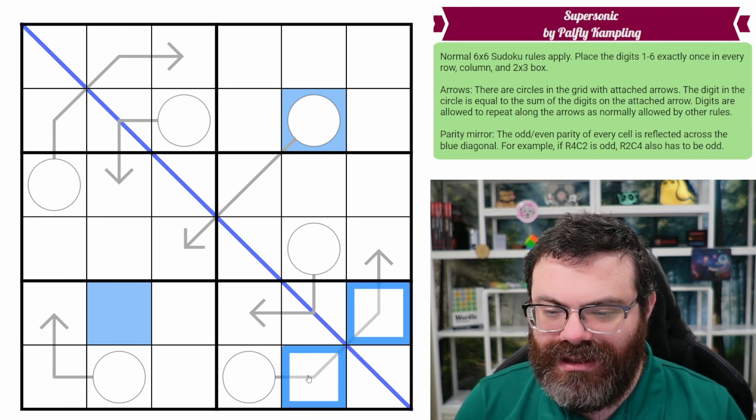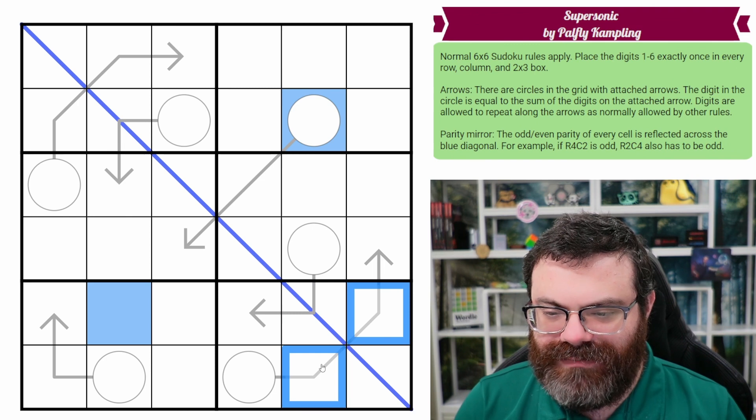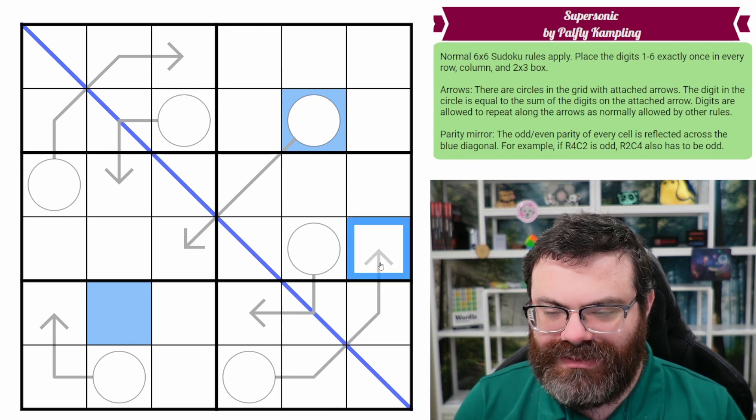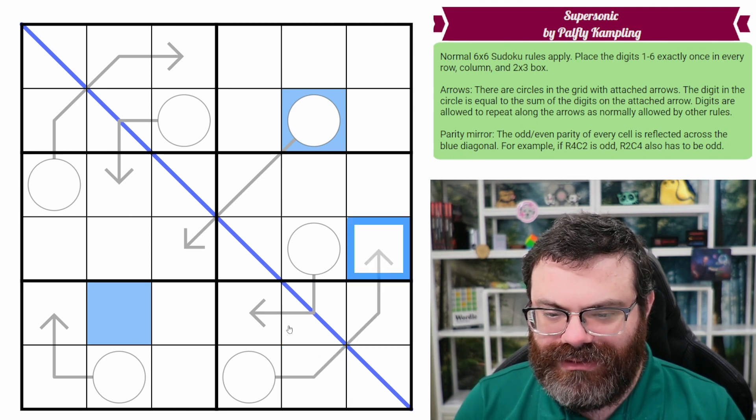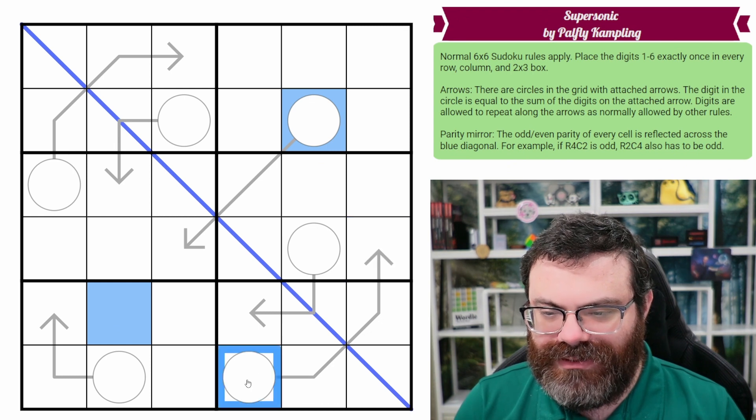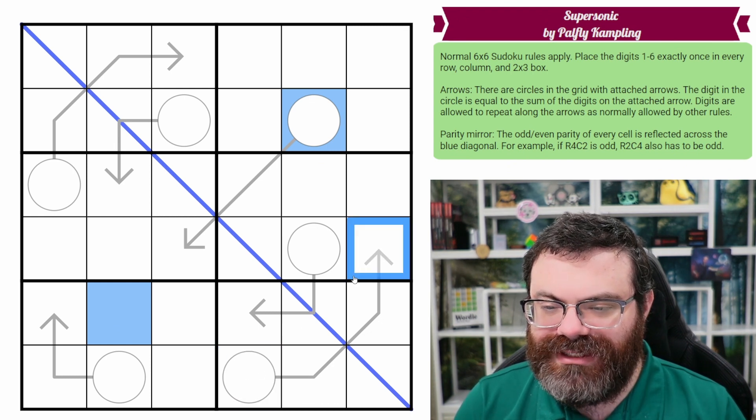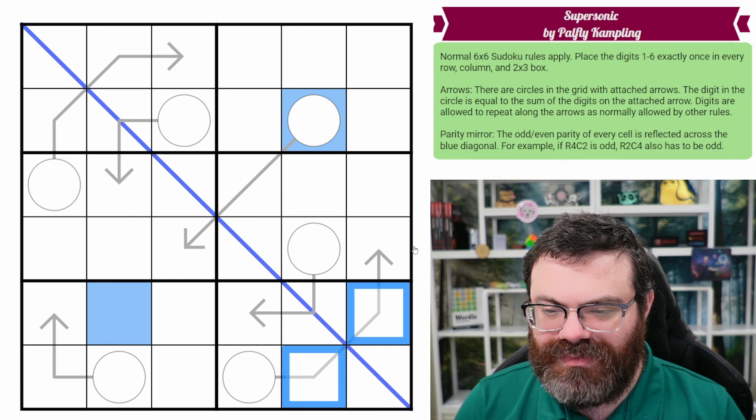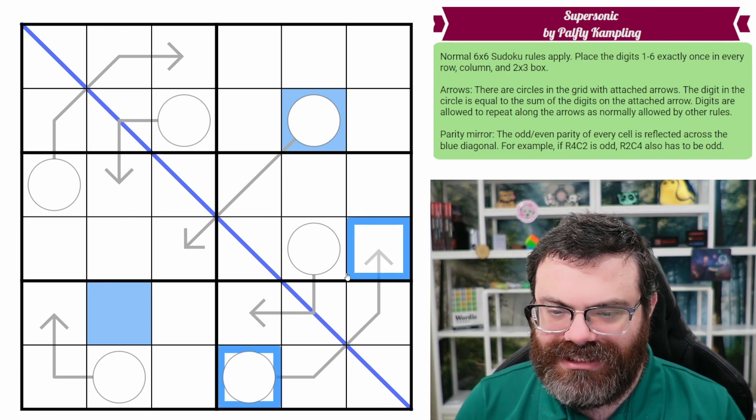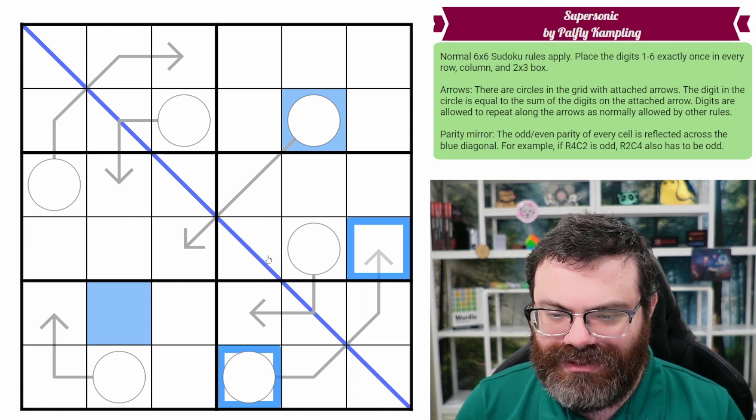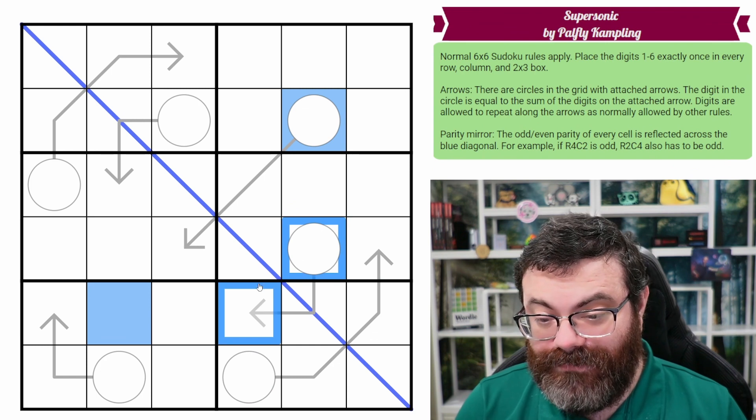So we can mirror that and that's going to be even as well. Do we have anything else like that? Well, we know that these two are the same parity, but this we don't know if it's even or odd. Oh, but it's the same as this one. But they're the same regardless because even numbers preserve parity. So the parity mirror doesn't even have to tell us these are the same. That's just going to happen. These are the same parity. There we go.